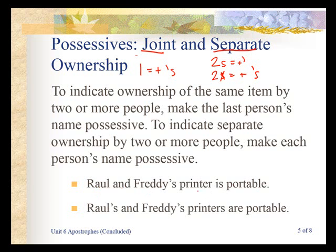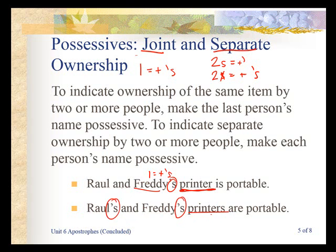'Rawl and Freddy's printer is portable.' Because there's only one printer, we know they share possession. When they share possession, they also share how they show possession, and that is shown only on the last one listed — Freddy. Freddy is singular, so we add apostrophe s. 'Rawl's and Freddy's printers are portable.' Here they each have a printer, so they each show possession. Both Rawl and Freddy are singular, so each gets an apostrophe s.